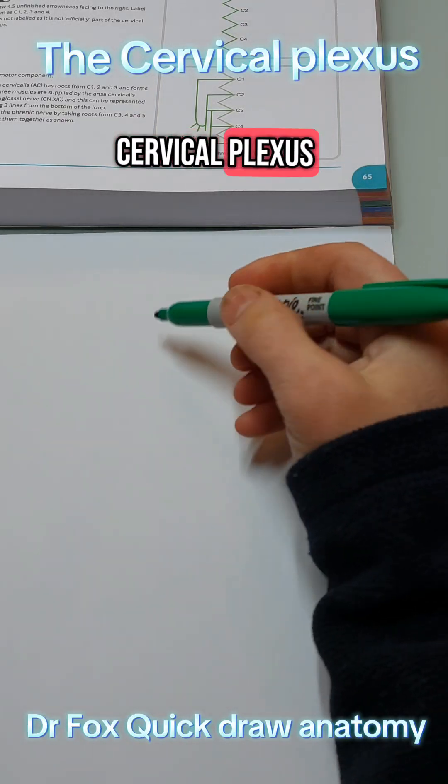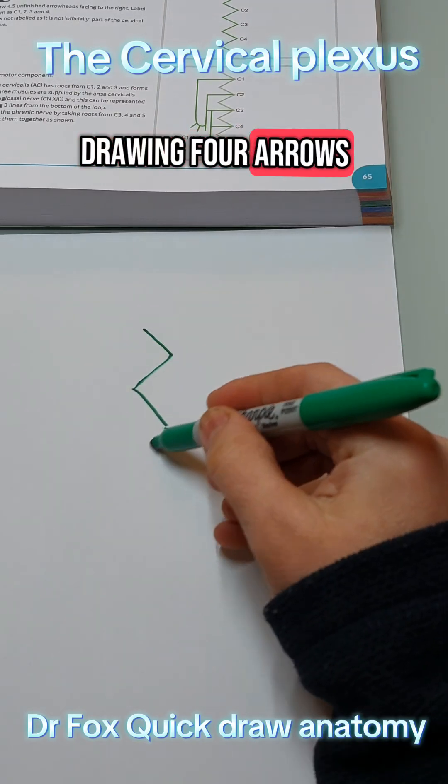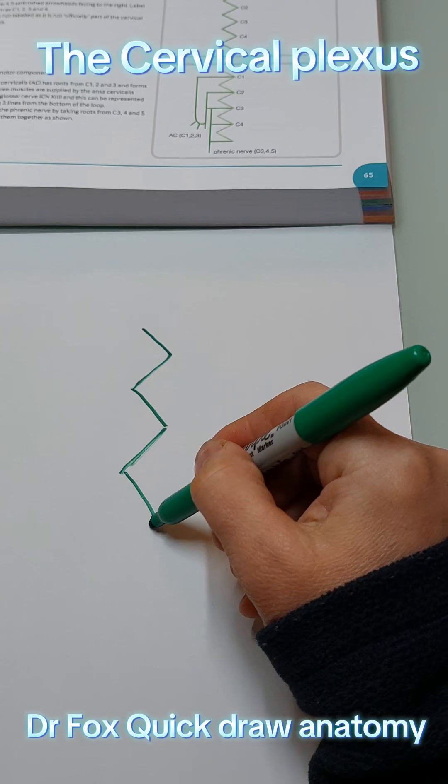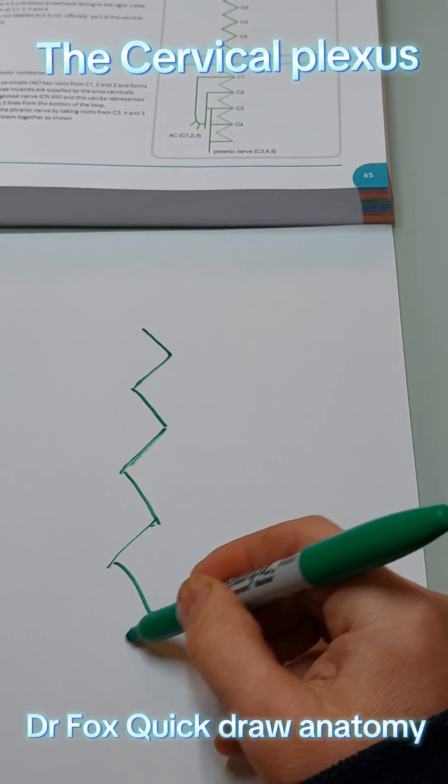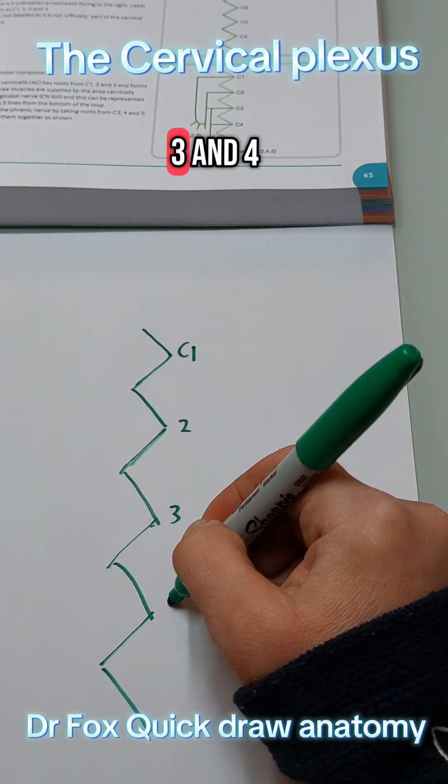Next we're going to learn the cervical plexus. So start by drawing four arrows and a half and label them C1, 2, 3 and 4.